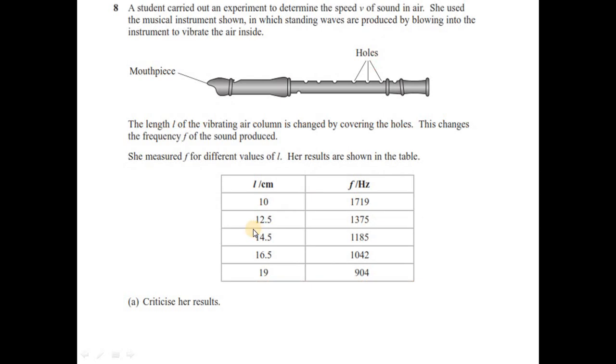Question number 8. A student carried out an experiment to determine the speed v of sound in air. She used a musical instrument shown in which standing waves are produced by blowing into instrument to vibrate the air inside. The length l of the vibrating air column is changed by covering the holes. This changes the frequency f of the sound produced. She measured f for different values of l. Her results are shown in the table. This is a typical question. You can write less number of reading, inconsistent significant figures, and no repetition.